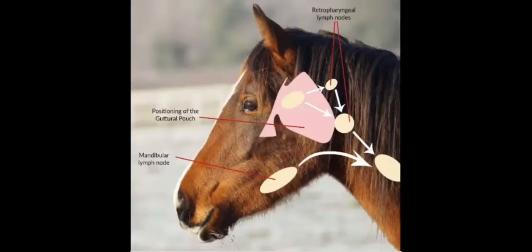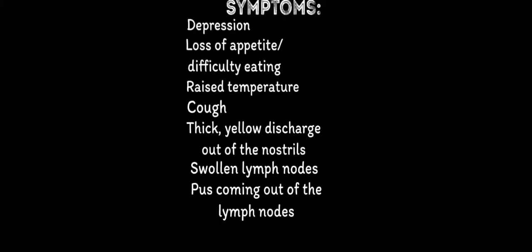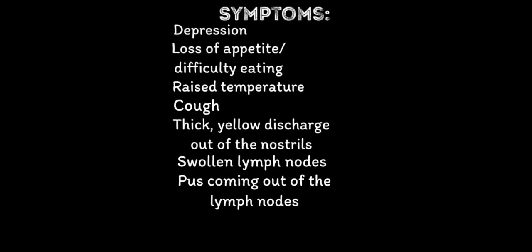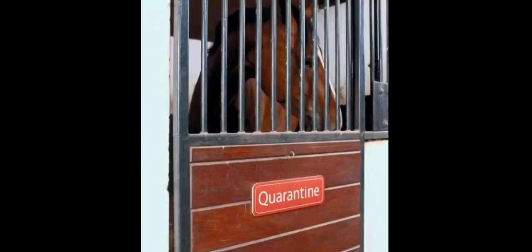Number six: strangles. Strangles is a highly contagious respiratory infection caused by bacteria that causes the lymph nodes around the jaw to be swollen, thus almost strangling the horse. Symptoms include depression, loss of appetite, difficulty eating, raised temperature, cough, thick yellow discharge from the nostrils, swollen lymph nodes around the throat, and pus coming out of these lymph nodes. Treatment involves completely isolating the horse so there's no further contamination. Most horses will recover on their own, but in severe cases antibiotics are required. Always seek veterinary advice.